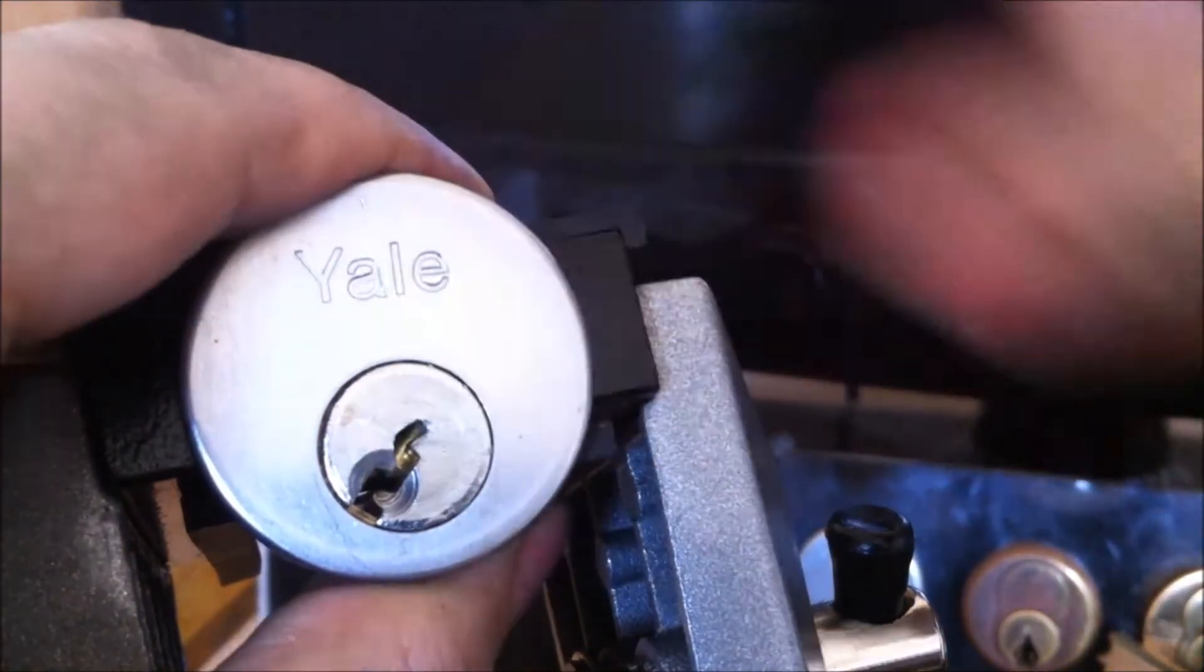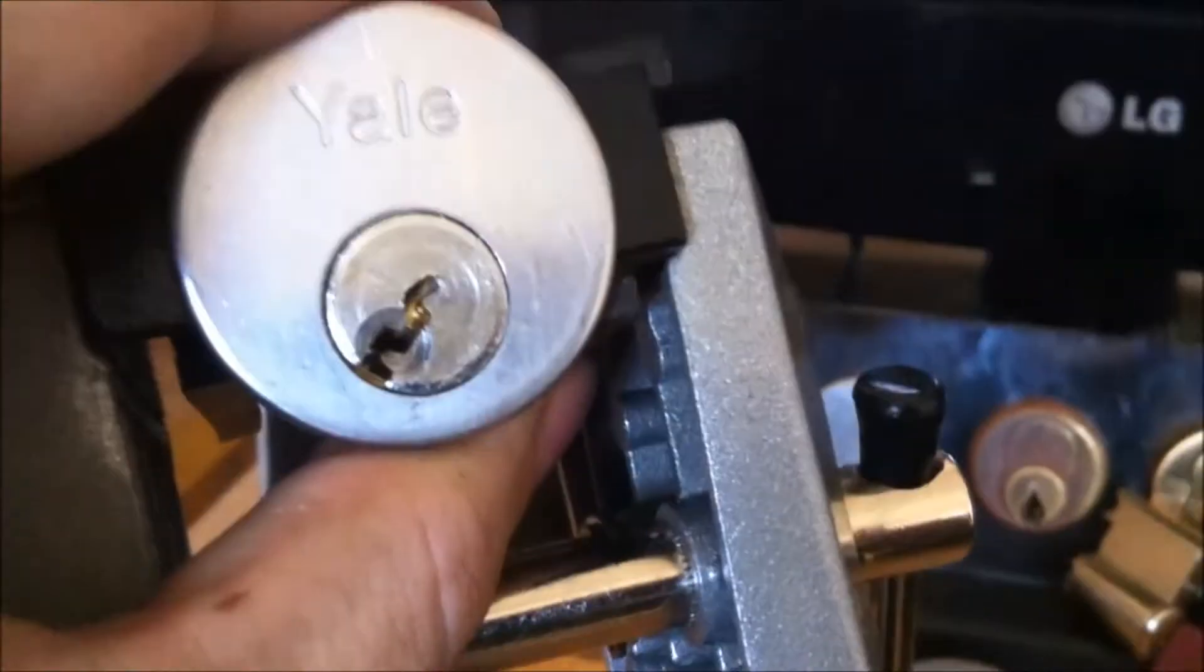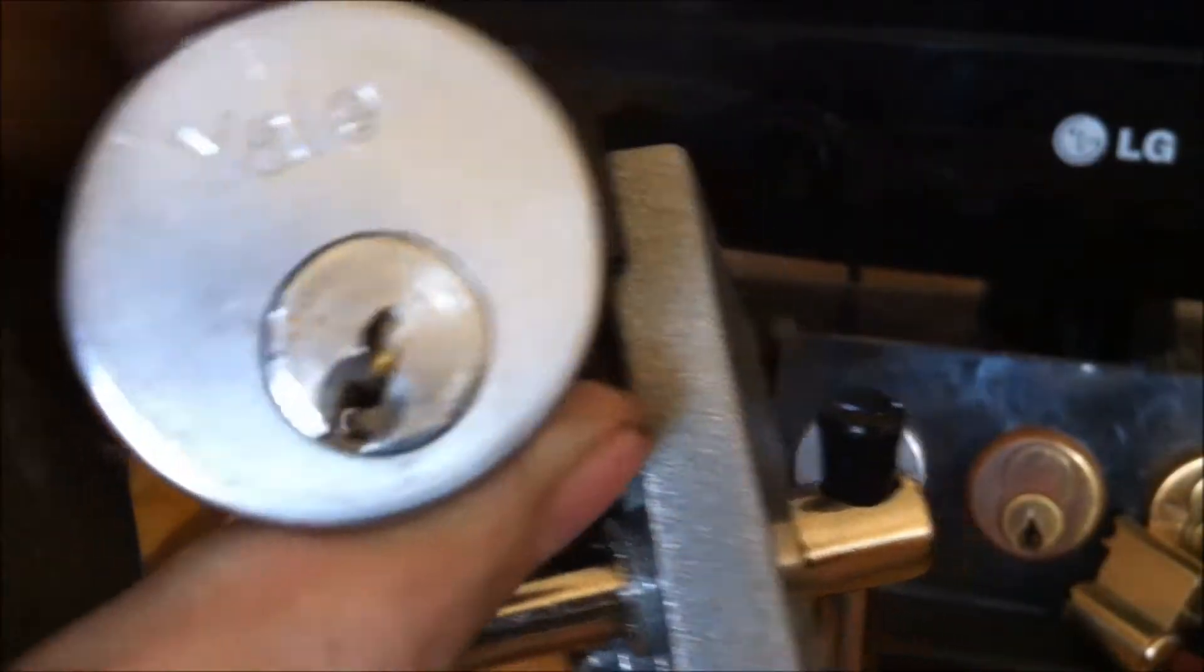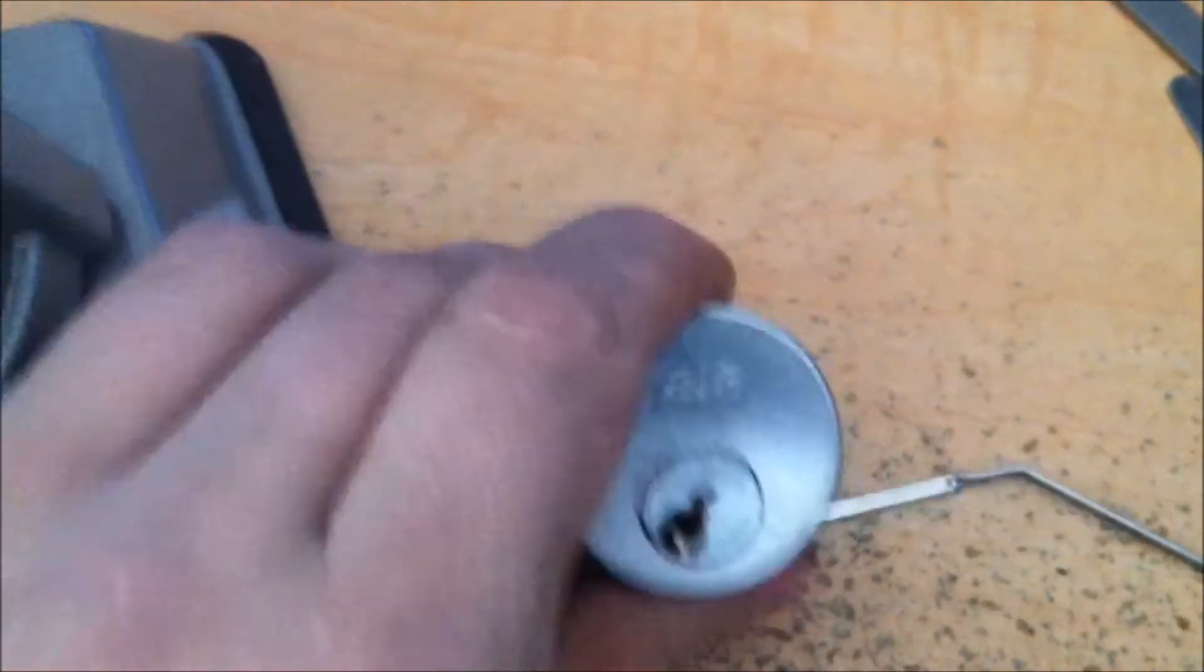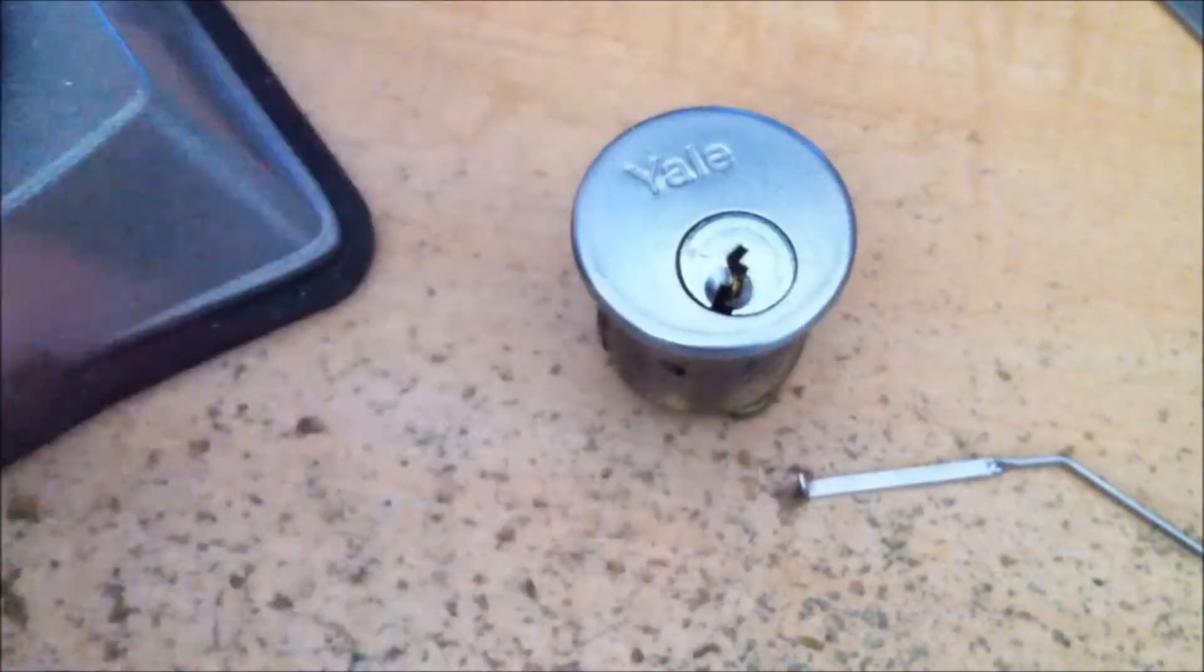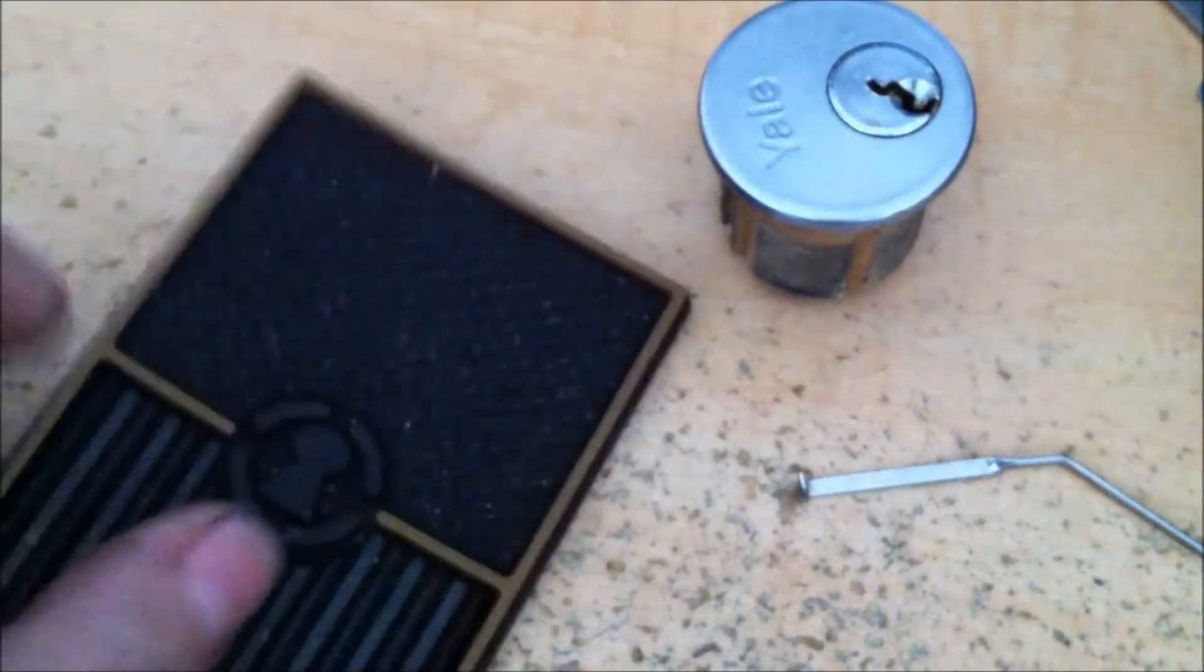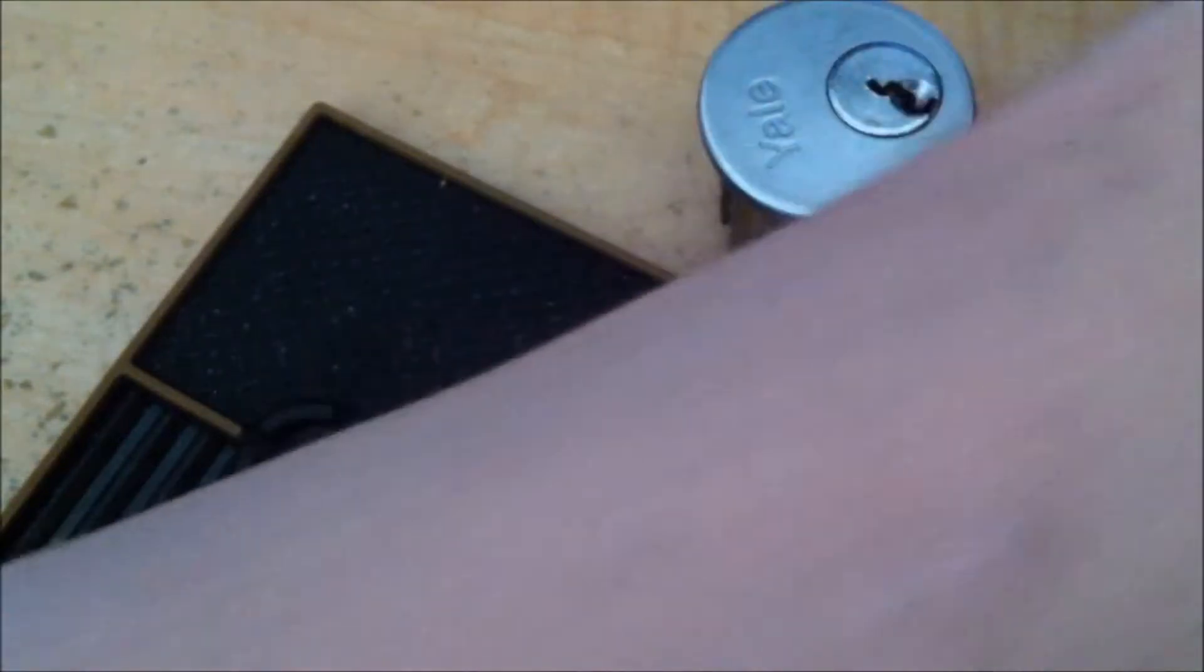Anyway, since we got her open in pretty decent amount of time, actually the quickest I've had it open yet, let's take a look what's inside of this thing. This nasty bugger almost broke picks on this Yale. So that keyway too is probably my nemesis keyway.